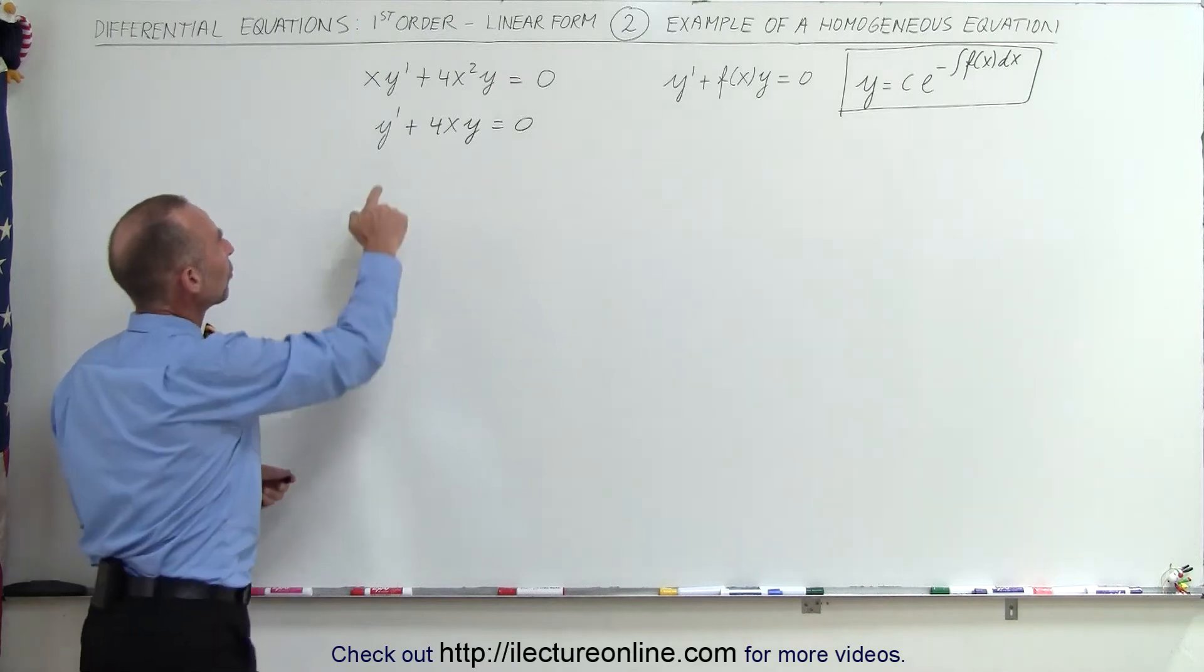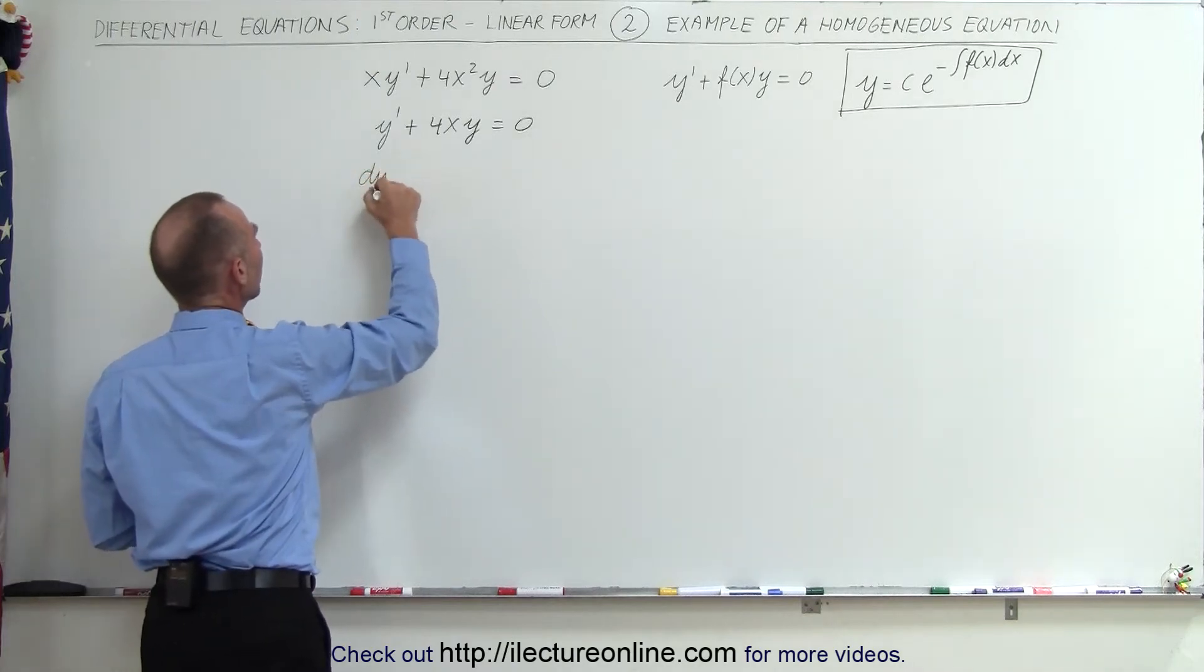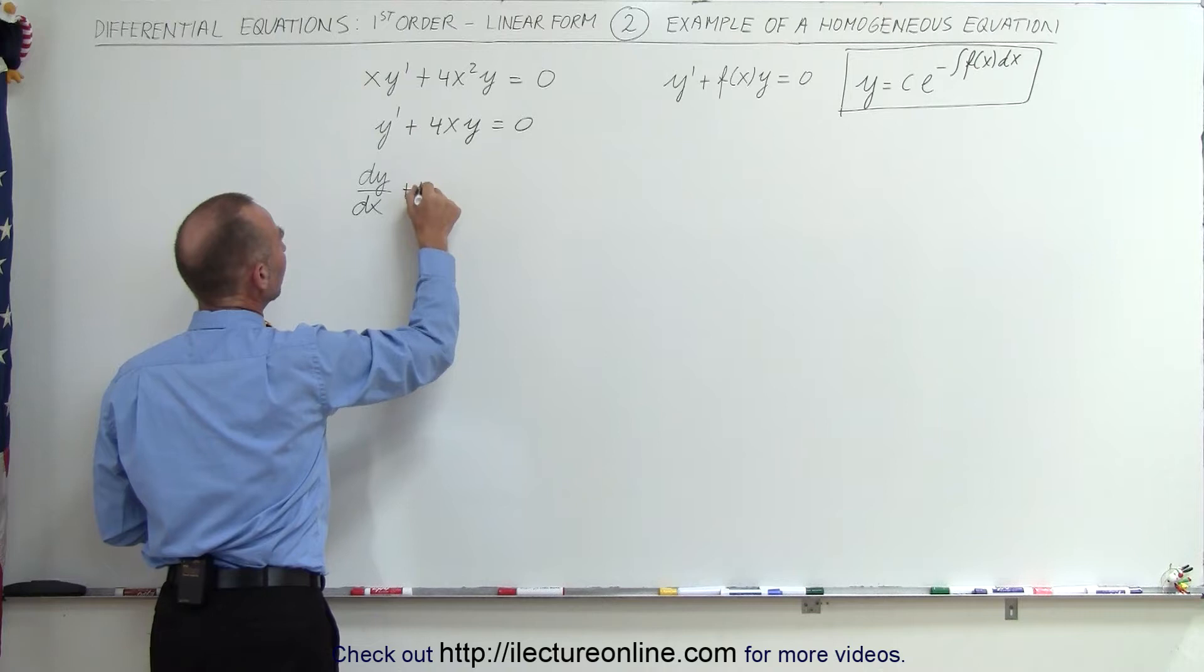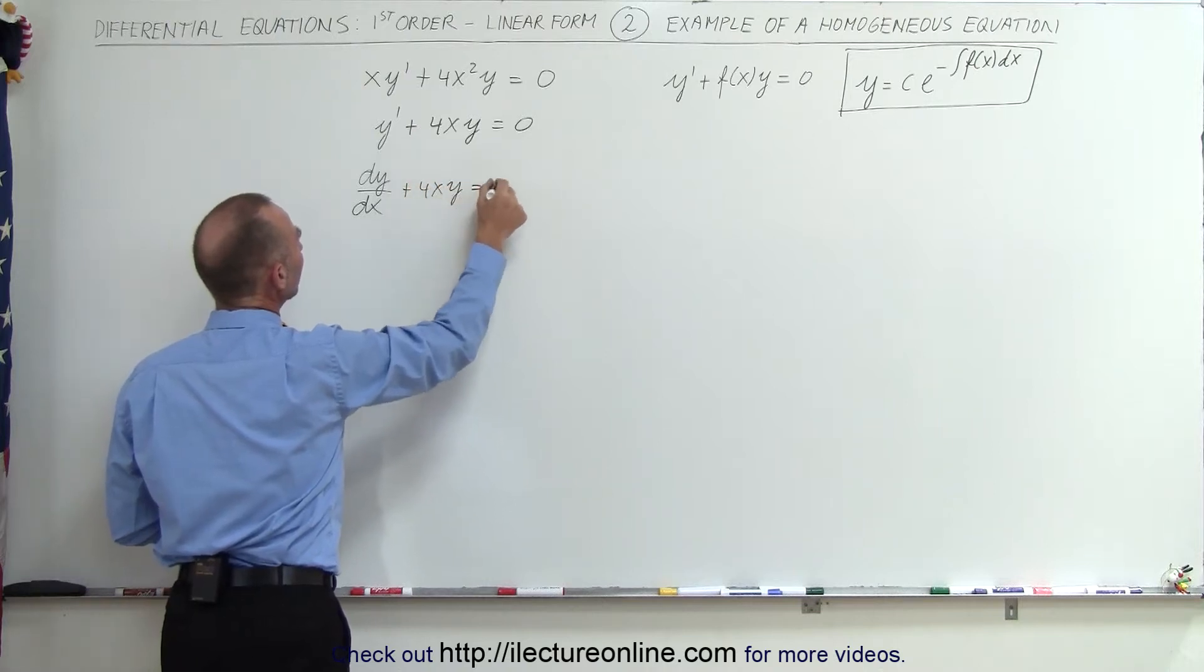We're going to write this as dy/dx, so dy/dx plus 4x times y equals zero.